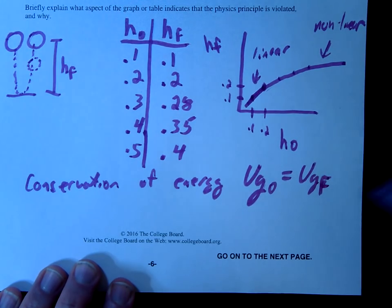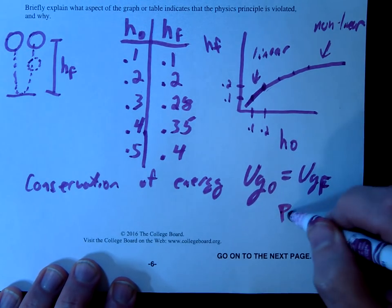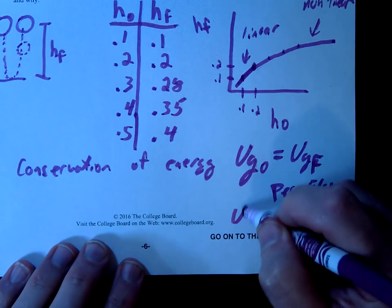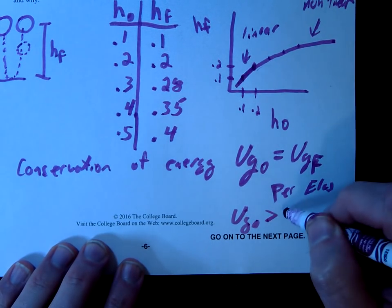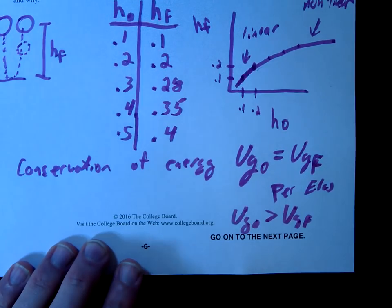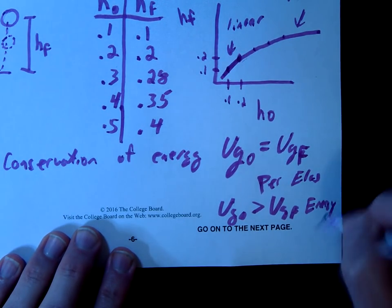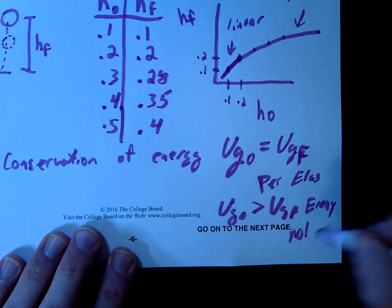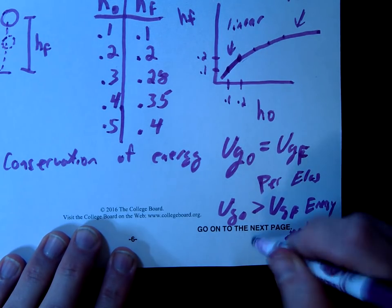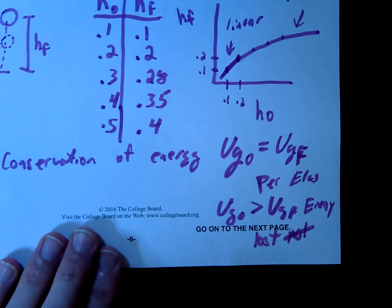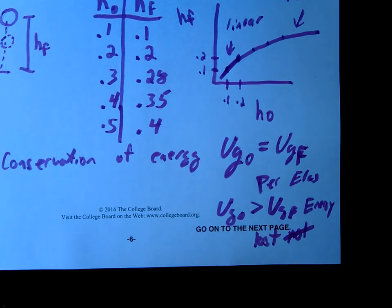And you'd talk about the UG initial equaling UG final, and that means it's perfectly elastic. And when UG initial starts to become greater than UG final, then there's going to be some kind of energy lost, and then it's not perfectly elastic. Energy lost, and that means then it's not perfectly elastic at that point.